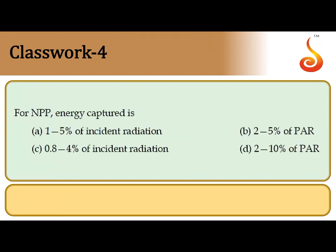The fourth question asks about net primary productivity and energy captured. The only group along the food chain capable of capturing energy are the green plants, called producers. Producers are known to capture only about 1 to 5 percent of incident radiation to prepare their biomass, so the correct answer is option A: 1 to 5 percent of incident radiation.